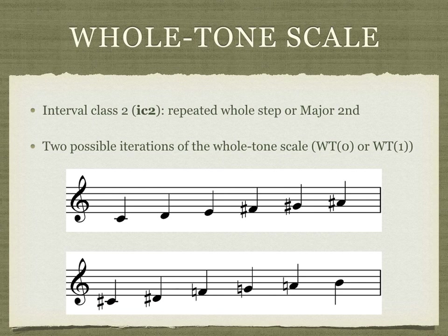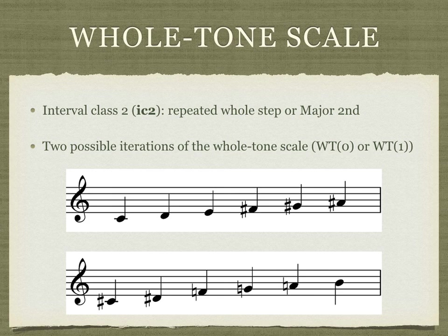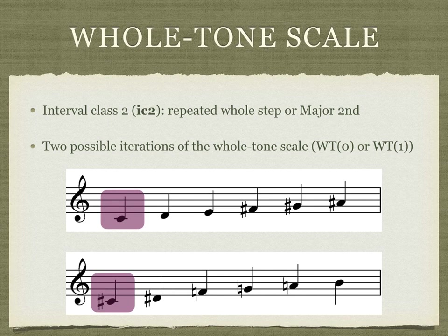Interval class cycle 2 is comprised of repeated whole steps, and as we have seen, this is called the whole tone scale. There are only two possible iterations of the whole tone scale which divide the octave evenly — one which contains the pitches on the top staff and one on the bottom staff. If you begin this scale on another note, you'll end up with the same pitches. We call this whole tone 0 if it contains C, and whole tone 1 if it contains C-sharp or D-flat. These numbers reference pitch class integers, with C being 0 and C-sharp/D-flat being 1 in the mod 12 pitch class space. Listen to what these two scales sound like.